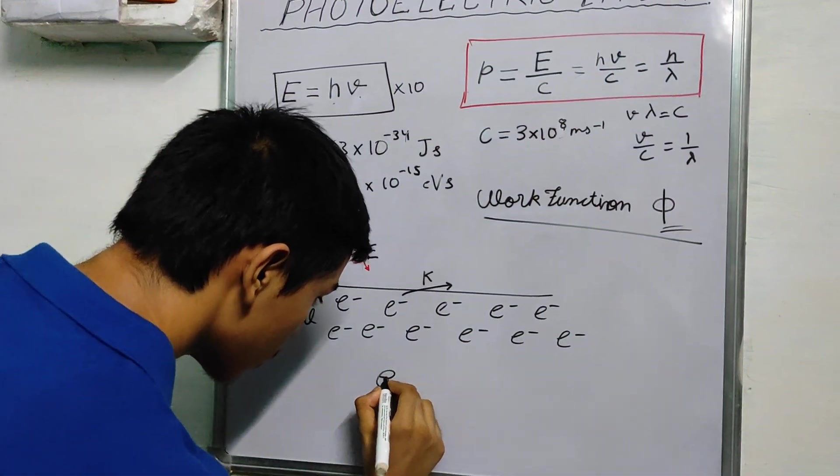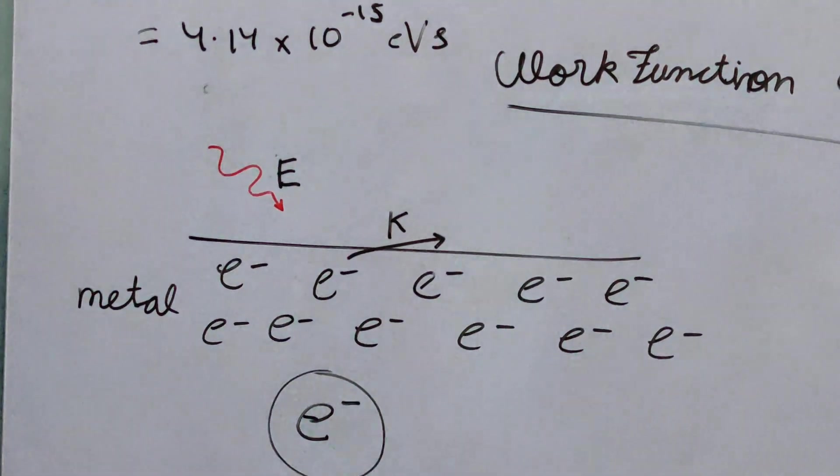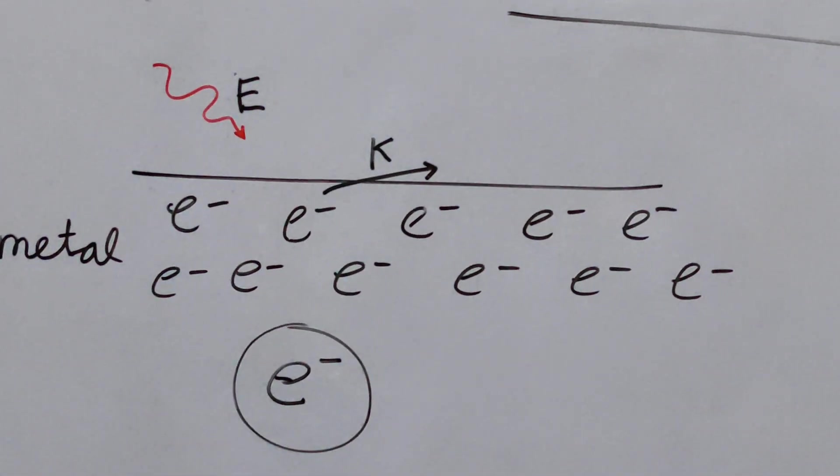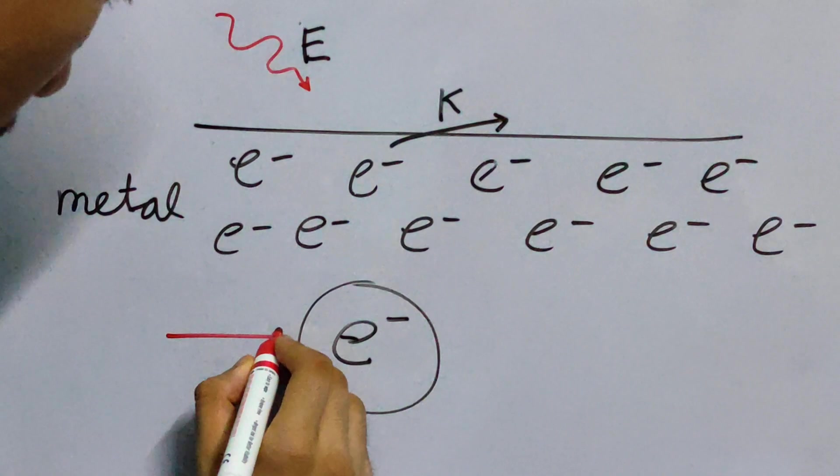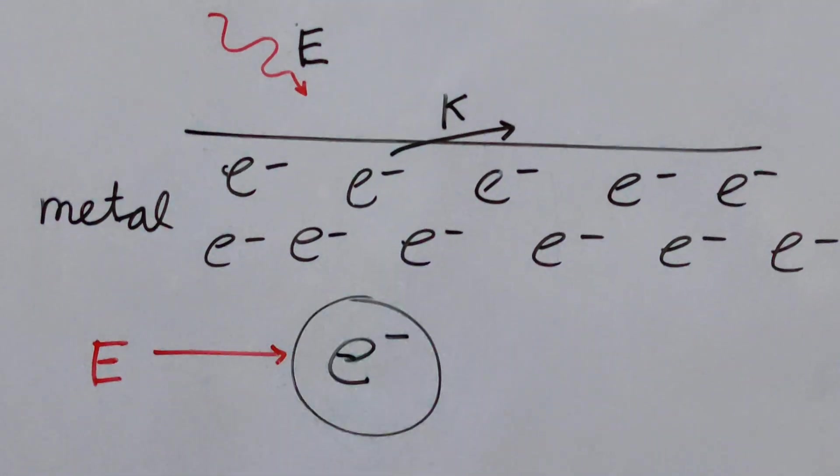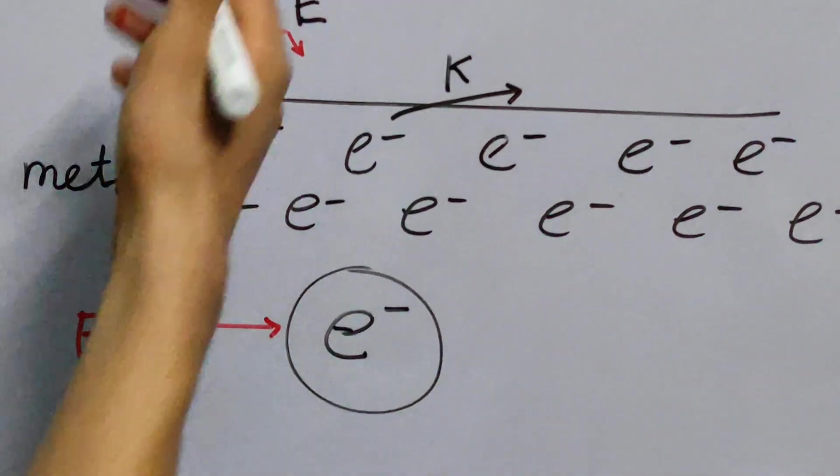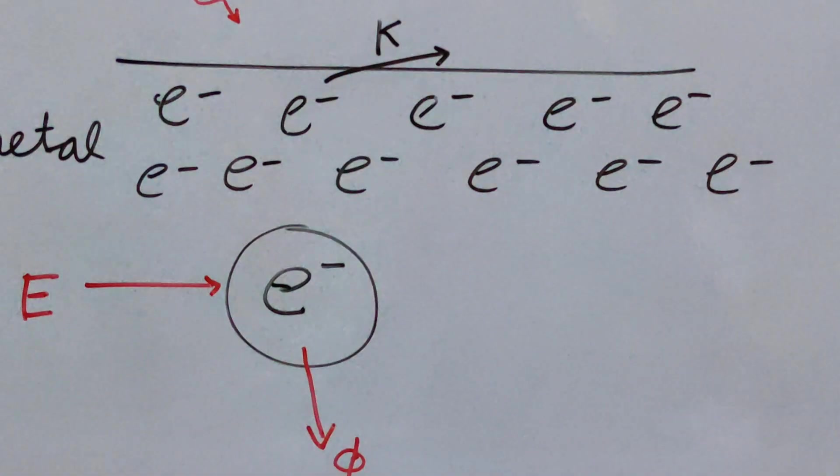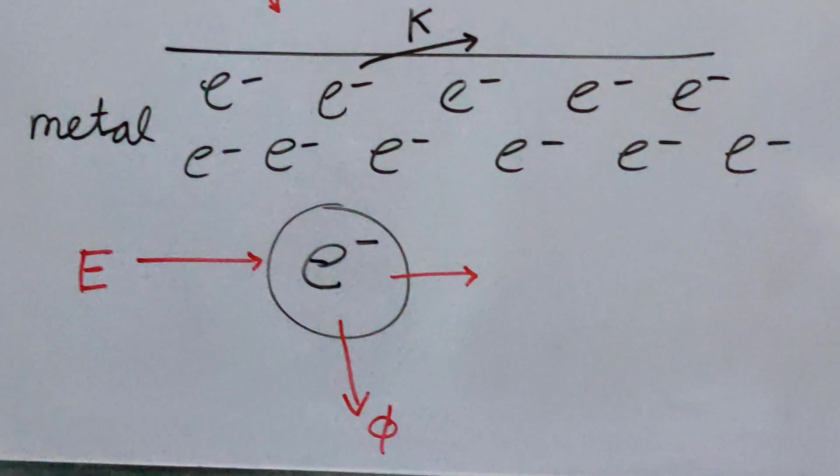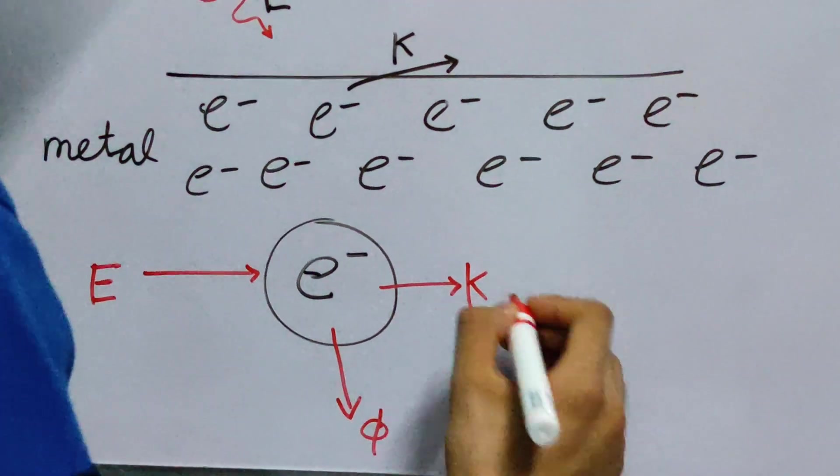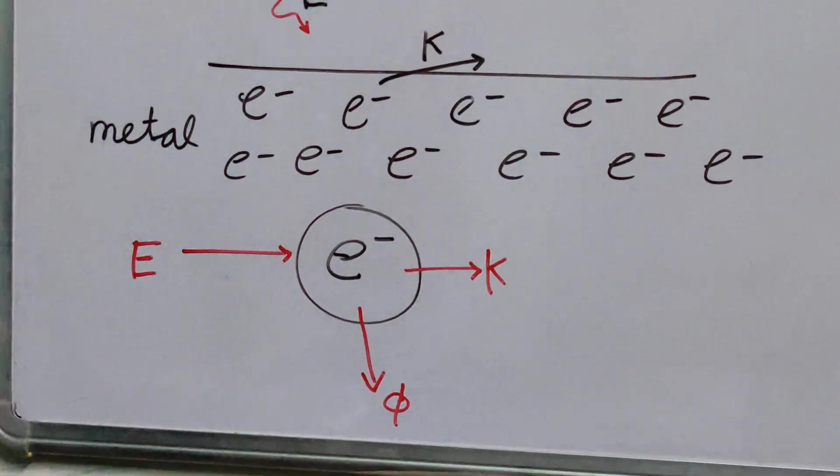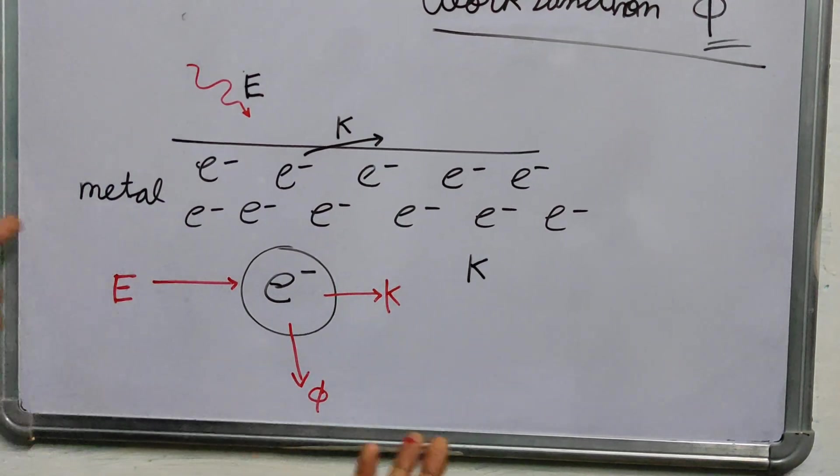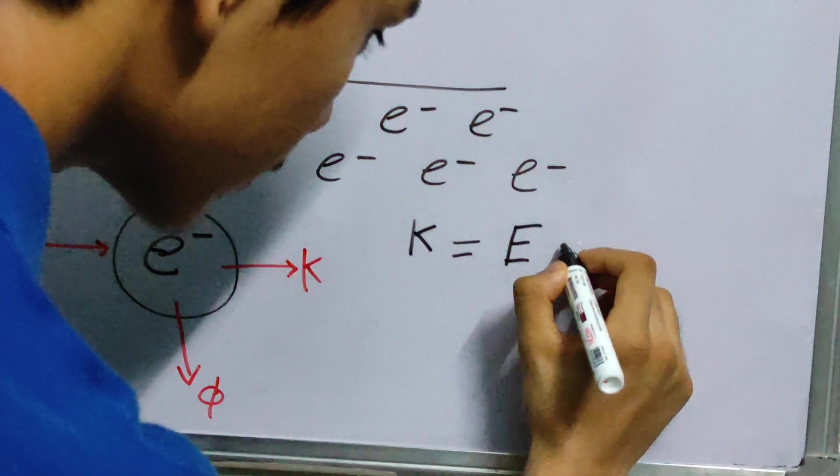You give this electron some energy, which is equal to phi, which is equal to the work function, and this is lost in getting out of the surface. And then the entire energy is the kinetic energy. Can we use the conservation of energy and see what are the relations between this, this, this and this? Let us see. So you have this electron, E-. Let us look at the energy transitions. Energy supplied or energy given by the electron. So you give some energy, E, to the electron.